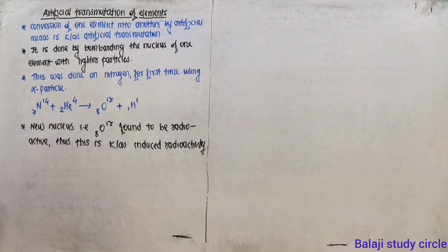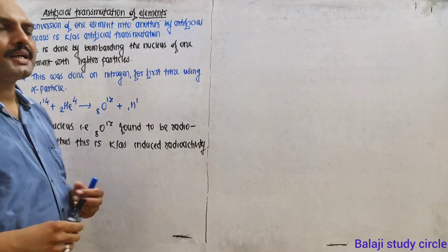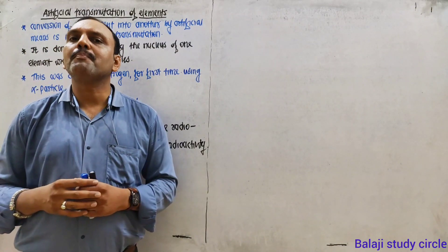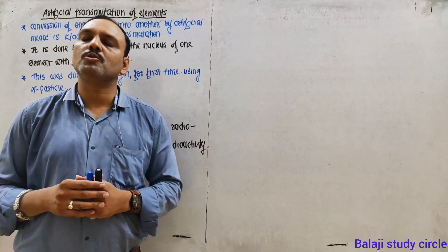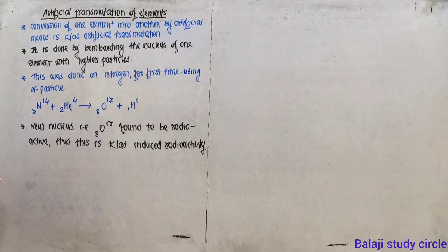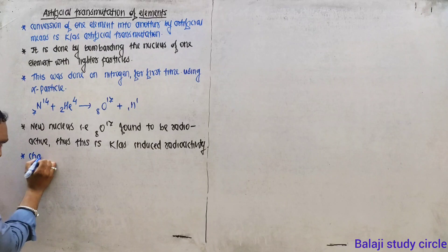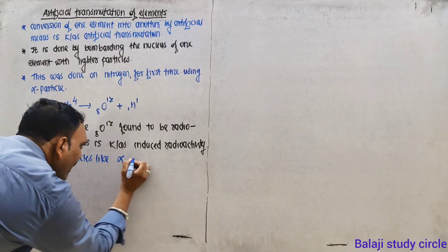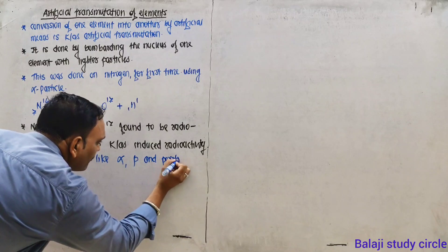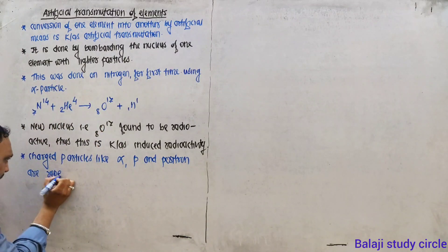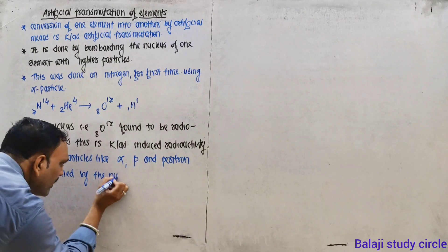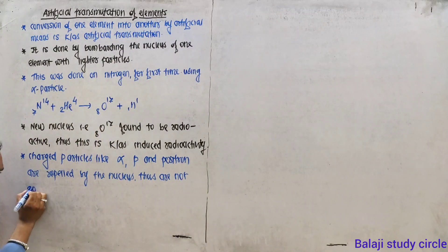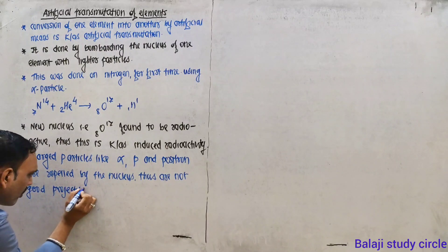Thus this is known as induced radioactivity. Charged particles like alpha, proton, and positron are repelled by the nucleus because the nucleus carries a positive charge. This is why they are not good projectiles.